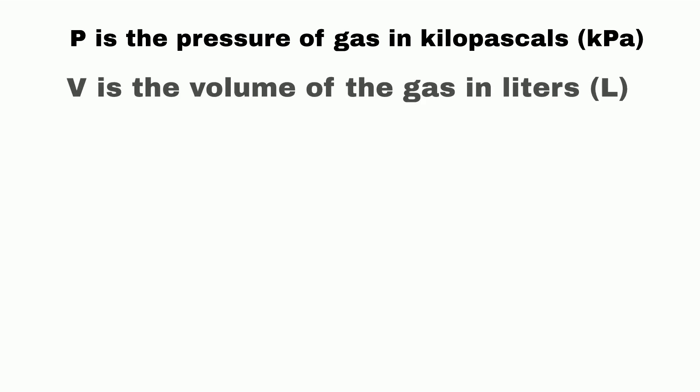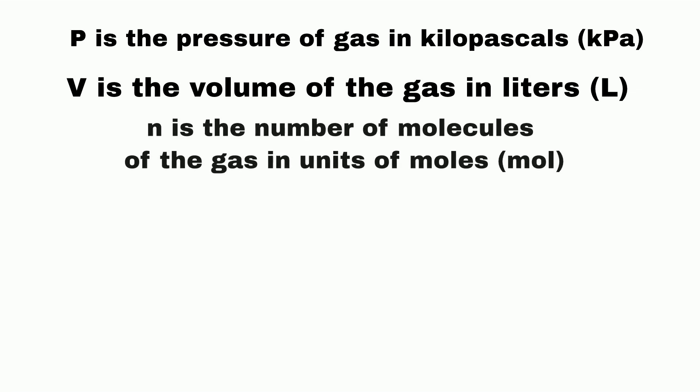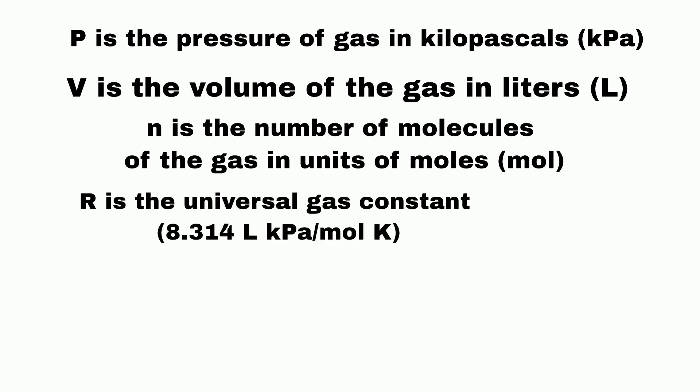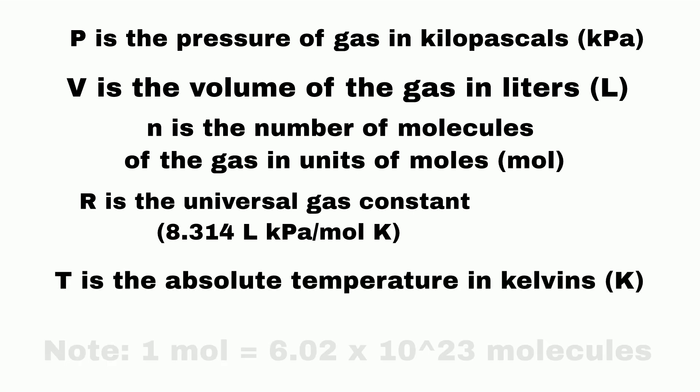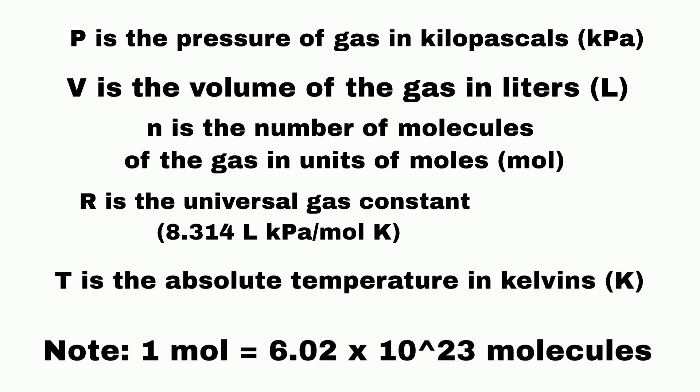V is the volume of the gas in liters, L. N is the number of molecules of the gas in units of moles. R is the universal gas constant, 8.314. And T is the absolute temperature in kelvins, K.